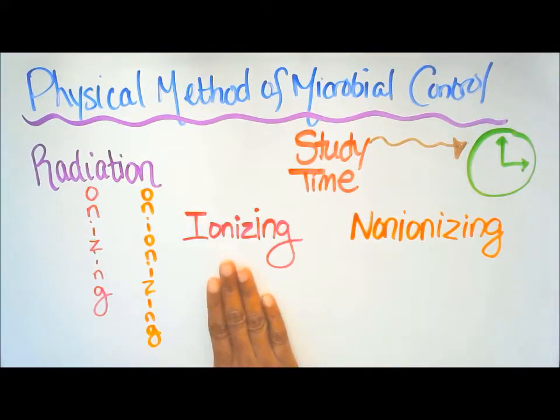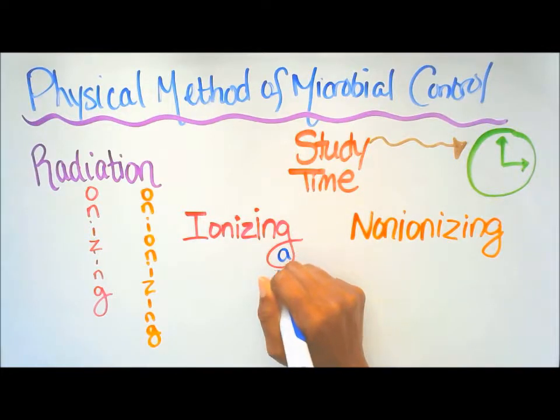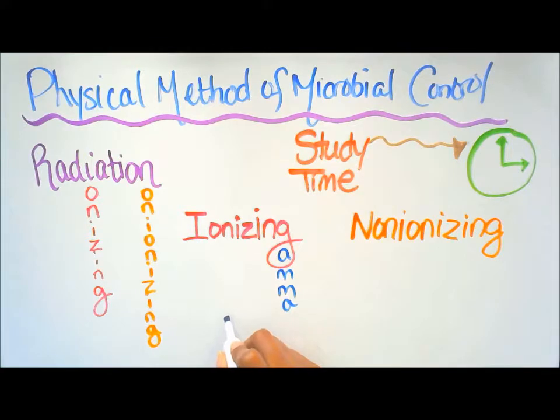Now here I have ionizing and non-ionizing. Under ionizing we have gamma rays, x-rays, and high energy electron beams. So we're going to use the G for gamma. So we have gamma rays under ionizing. We also have x-rays; we're going to use a different color for x-rays.